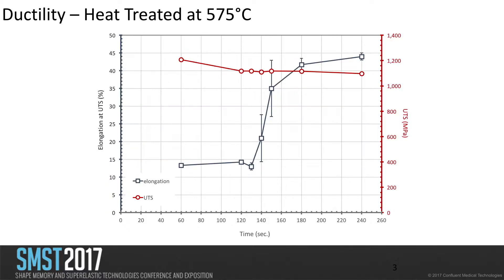In order to see this transition more clearly, we increased the resolution of the aging study and aged the material at shorter times. You can see here the elongation at different aging times, and also the UTS shown as a red curve. After two minutes and twenty seconds of aging, the elongation or ductility starts to increase, but the UTS keeps constant until it reaches a maximum at around three minutes aging.